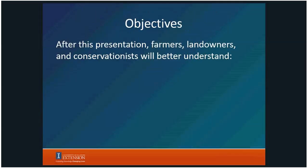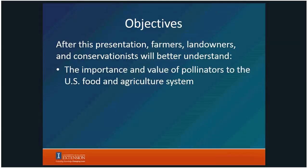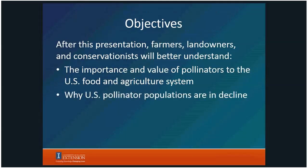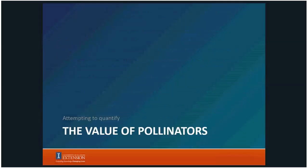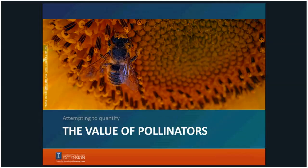Three things I want to accomplish: first, stress the importance and value of pollinators to our food and agriculture system in the United States; second, talk about why pollinator populations have been in decline, especially since the winter of 2006–2007; and third, talk about what we can do to support and increase the number and viability of pollinators in our landscapes — both personal and agricultural. We're going to try to quantify the value of pollinators.